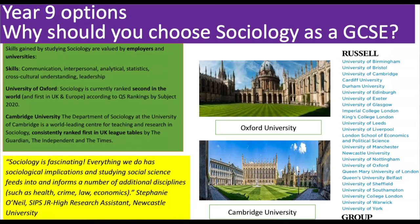Sociology at university is a highly valued subject. For example, the University of Oxford has classified sociology through its research as second in the world and first in the UK and Europe. Cambridge University specifically features a Department of Sociology that is the world's leading centre for teaching and research, and has been consistently ranked first in UK league tables. There are various universities where you can study sociology, and of course the Russell Group universities have courses available to you.